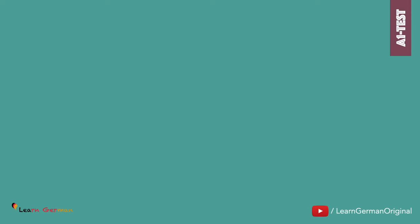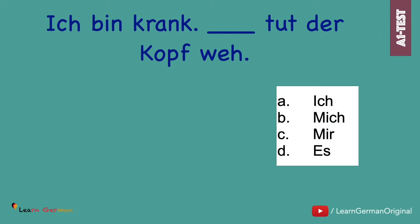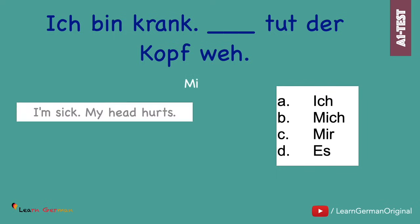Nummer fünfzehn. Ich bin krank. Tut der Kopf weh. And here your answer should be C: Ich bin krank. Mir tut der Kopf weh. Do you know why the answer should be mir and not ich, mich, or es? Do write it in the comments and let the others know.